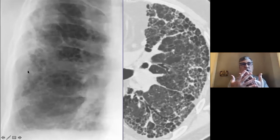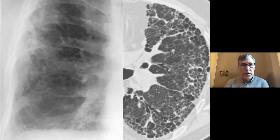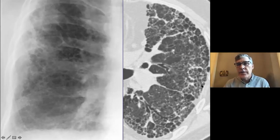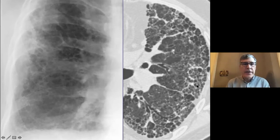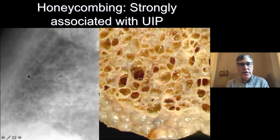What does fibrosis look like on the plain film? Reticulation and honeycombing looks like little crisscrossing webs of lines forming tiny ant-sized holes. That's what you see here — honeycombing: cysts forming these reticulations right up against the pleura peripherally. That's honeycombing, that's UIP. And once you say it, people are going to assume it's UIP.